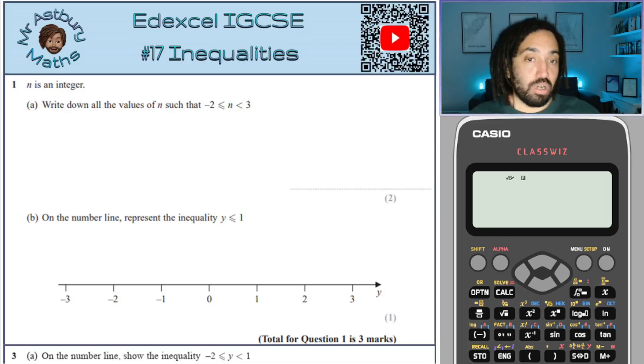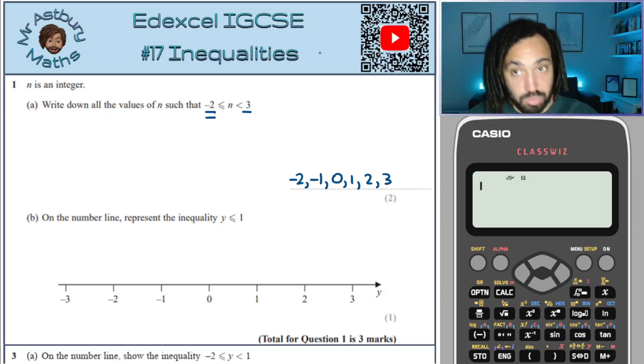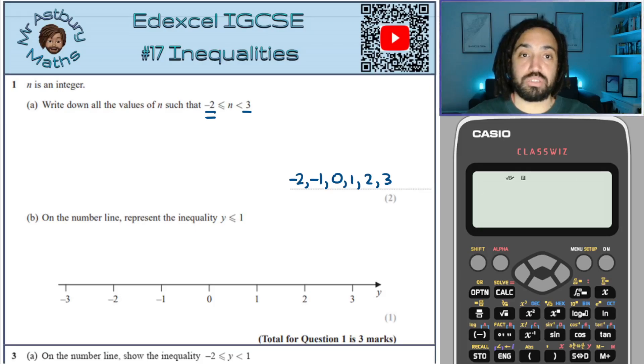n is an integer which means a whole number. Write down all the values of n that satisfy this inequality. So this means that n is in between minus 2 and 3. It can equal minus 2 but it cannot equal 3. So if we go through the numbers it can equal minus 2, minus 1, 0, 1, 2, can't equal 3. So that's where we must stop.